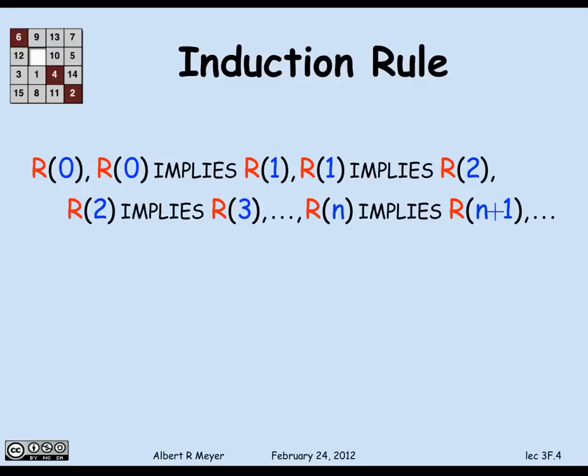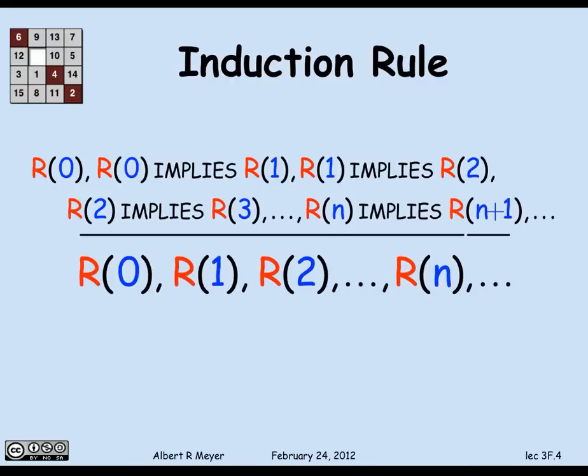We've written it out as an infinite set of implications to emphasize that the rule — if an integer is next to a red integer then it's red — is shorthand for this infinite number of different implications, each of which has to hold to apply the rule of induction. If all of these things hold, then you can conclude that 0 is red, 1 is red, 2 is red, n is red, and so on.